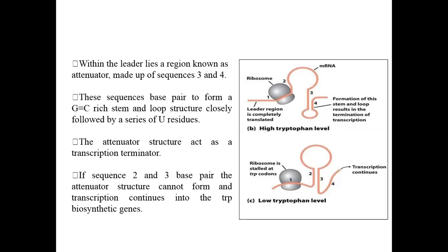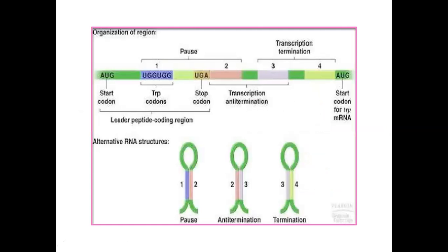If sequences 2 and 3 are base-paired, the attenuator structure cannot form and transcription continues into the tryptophan biosynthetic genes. There are three alternative RNA structures that can form: base-pairing between 1 and 2, between 2 and 3, or between 3 and 4. The 3-and-4 base-pairing structure acts as a terminator signal for the tryptophan biosynthetic genes. When 2 and 3 are base-paired, it signals anti-termination. When 1 and 2 are base-paired, the tryptophan operon is halted.